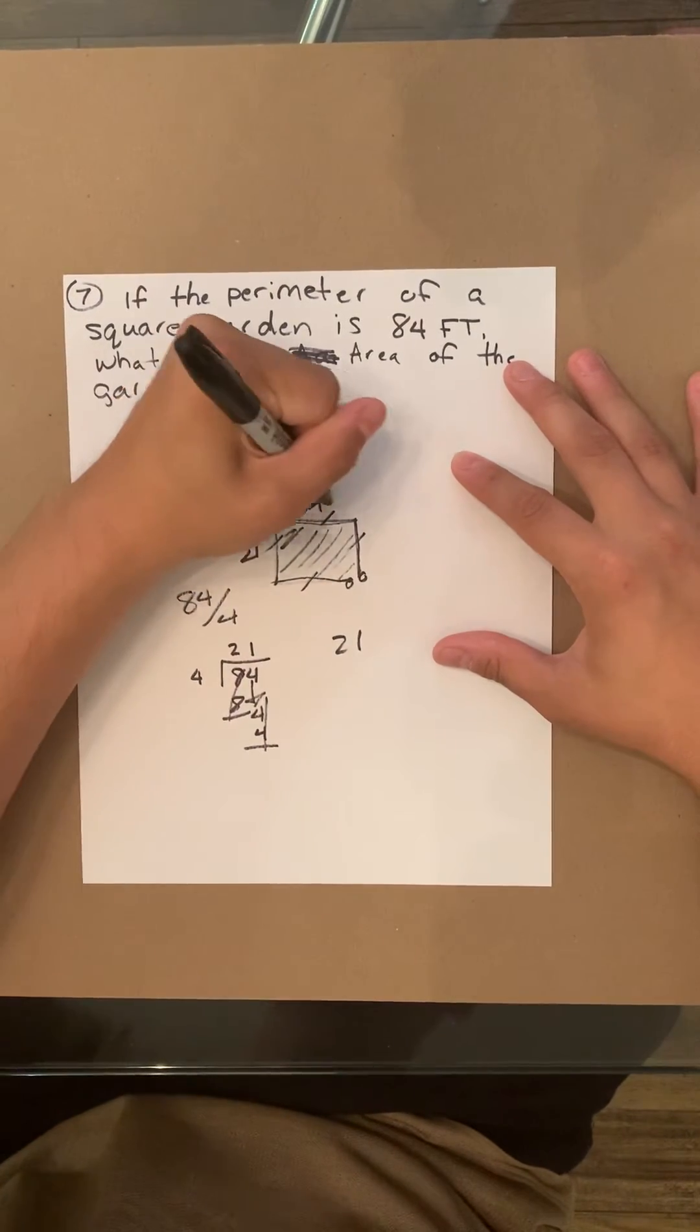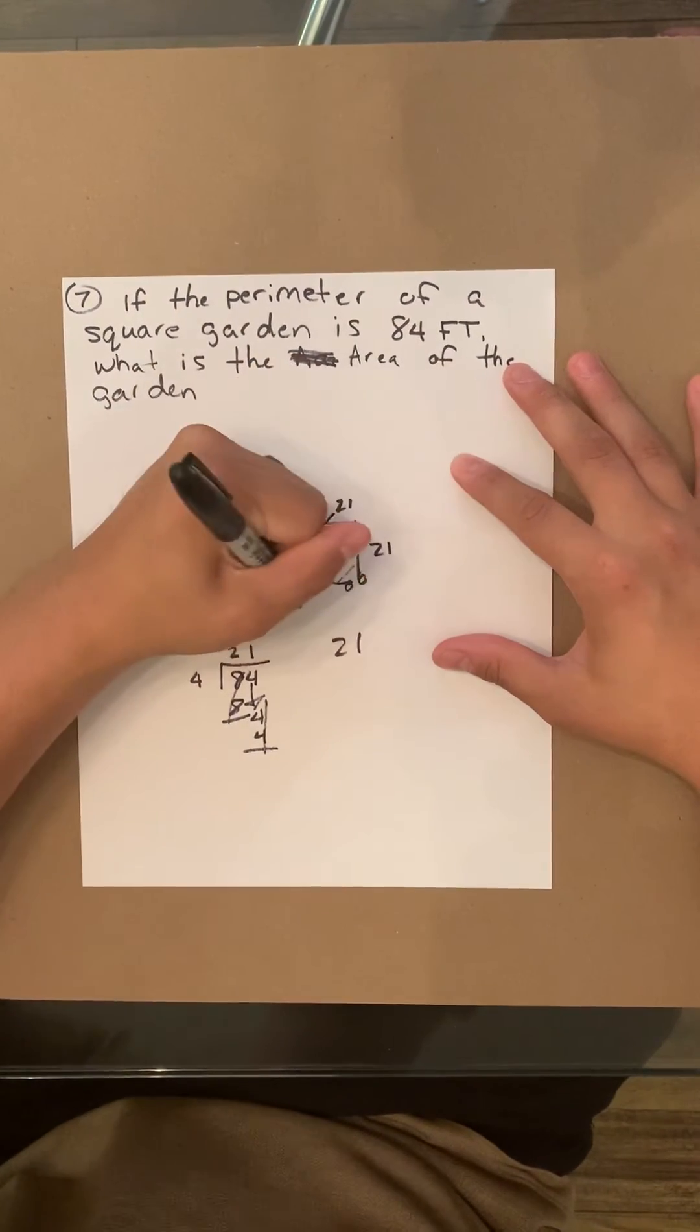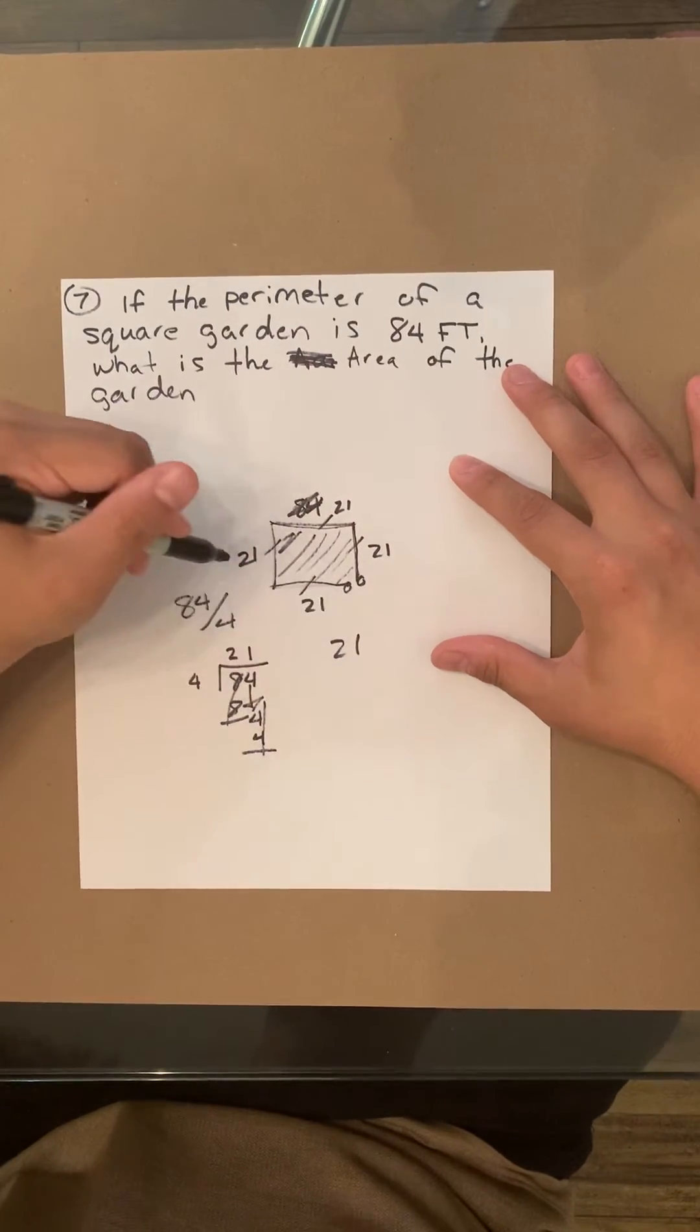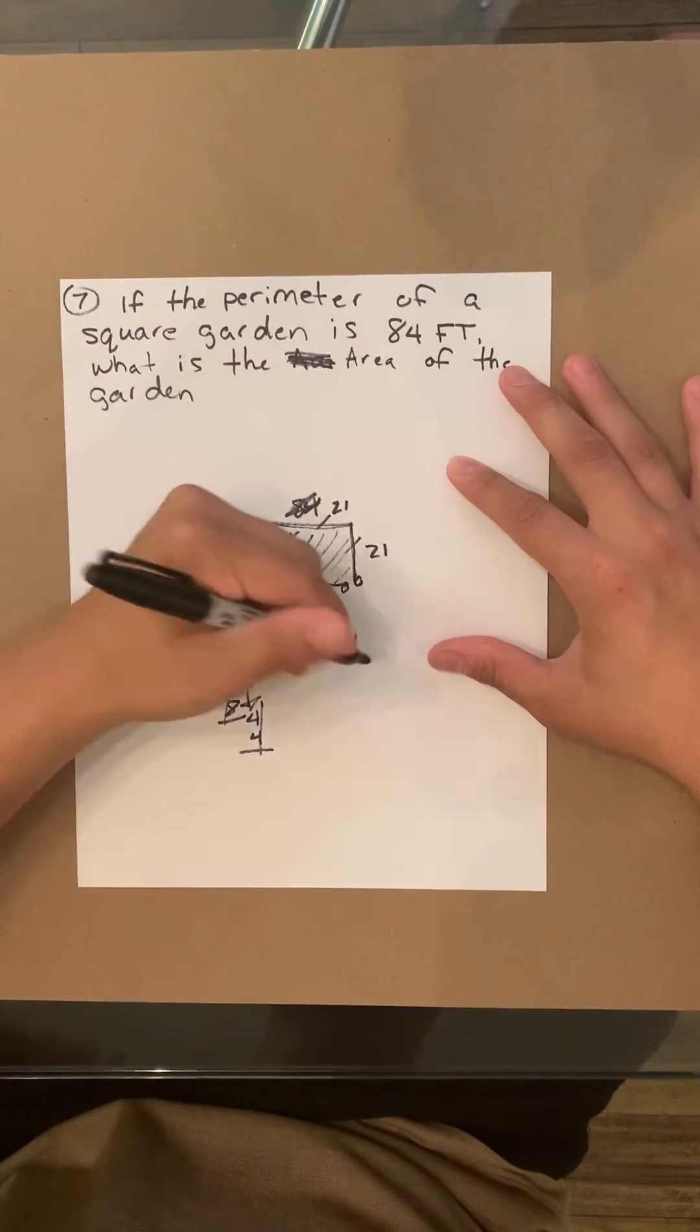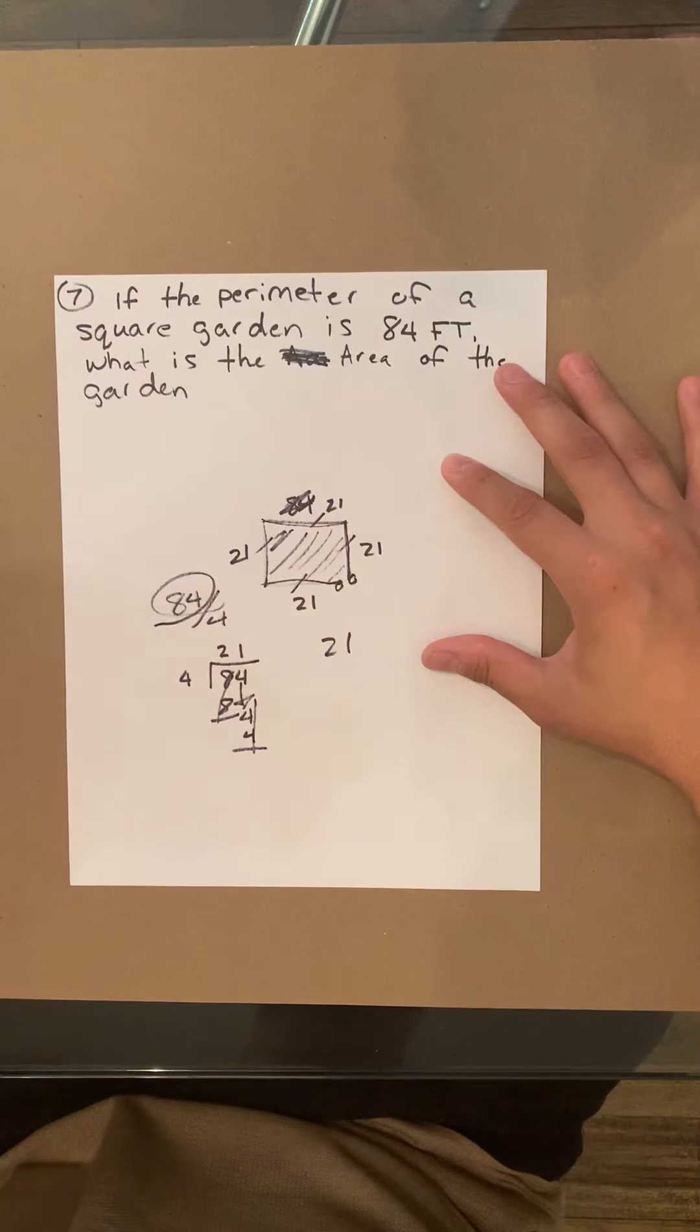So we now have 21. That means 21, 21, 21, 21. If you add 21 plus 21 plus 21 plus 21, that will equal 84, right?